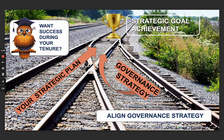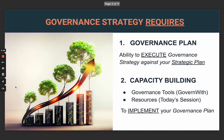You've got to align governance strategy to your strategic plan in order to achieve your strategic goals. When we talk about governance strategy, what it requires is a governance plan and the ability to execute governance strategy against your strategic plan. It's also important to have governance capacity building, governance tools, and governance resources — which was very much in line with yesterday's session. You need that capacity building to implement your governance plan.